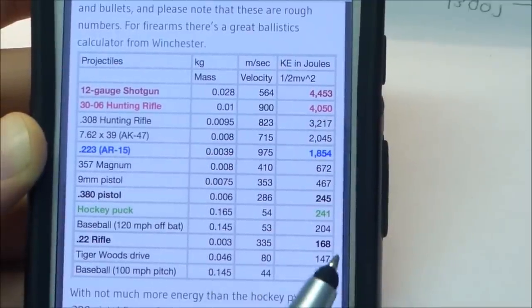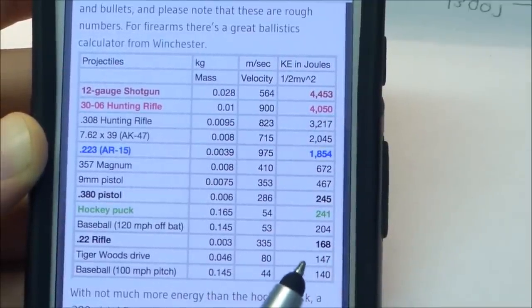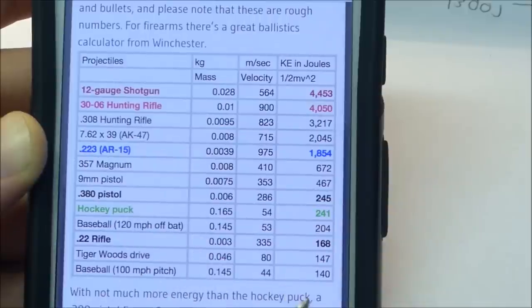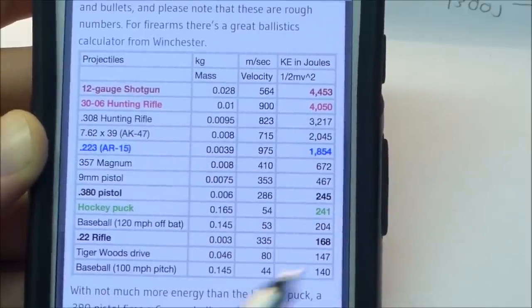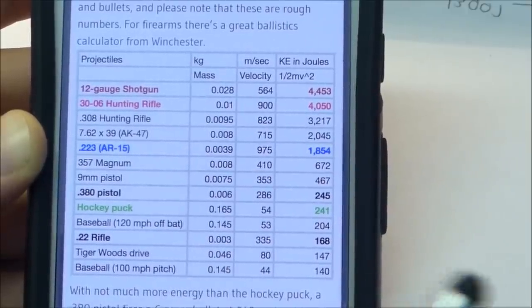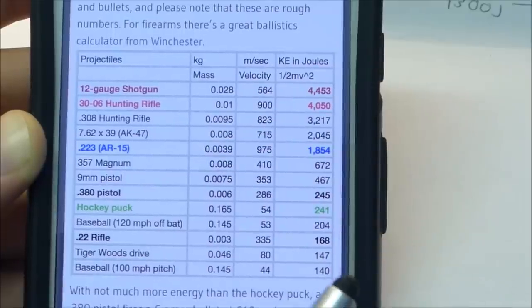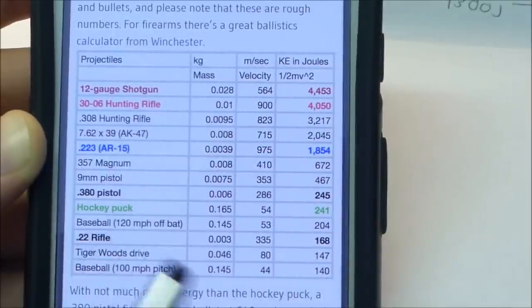We see that a .22 rifle has an energy storage of 168 joules. That means that my big capacitor bank has on the order of 9 or 8 times more energy than a .22 rifle.